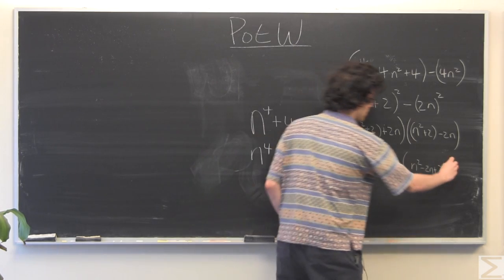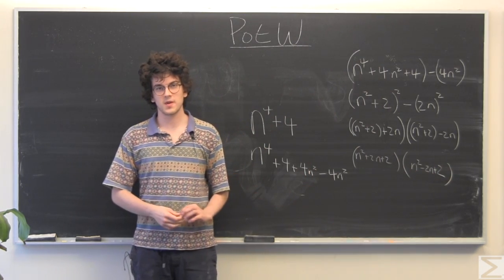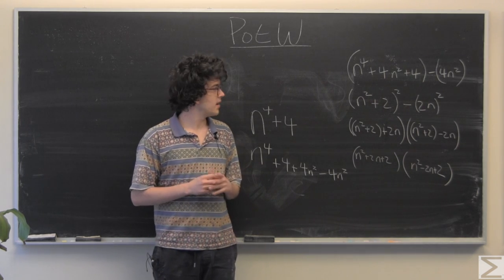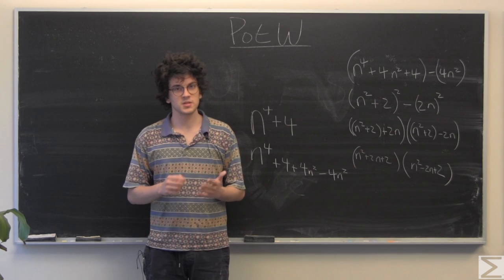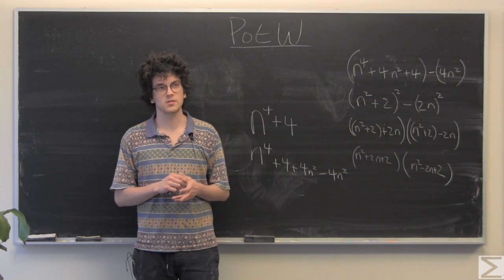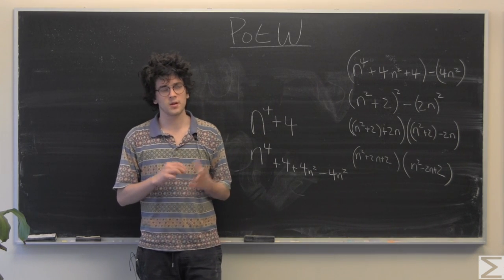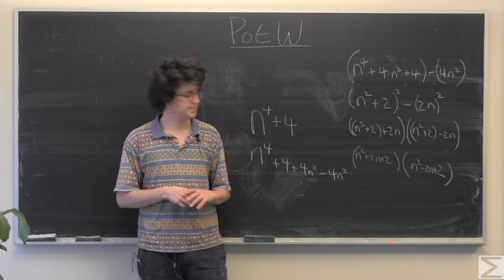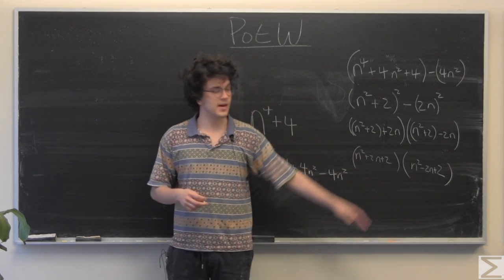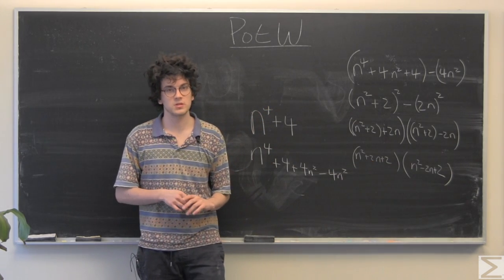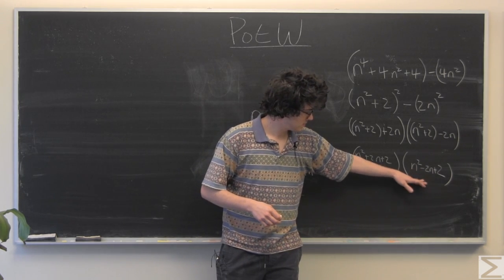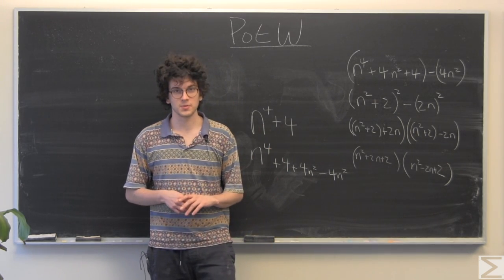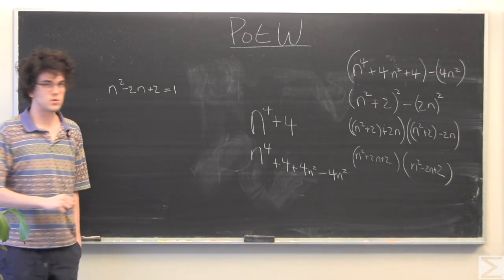So what we have now is we've come up with two factors of n to the fourth plus four, and we want one of these to be equal to one, and the other one to be equal to n to the fourth plus four. It's much easier to check for when something is equal to one than when something is equal to some number to the fourth power plus four. So looking at this term, we can see that that's never going to equal one if n is a natural number, because it's always going to be greater than one. In fact, it'll be greater than or equal to two. So that means this one must be equal to one if we want to solve for when n to the fourth plus four is prime.